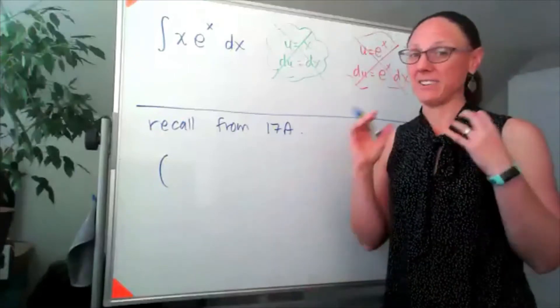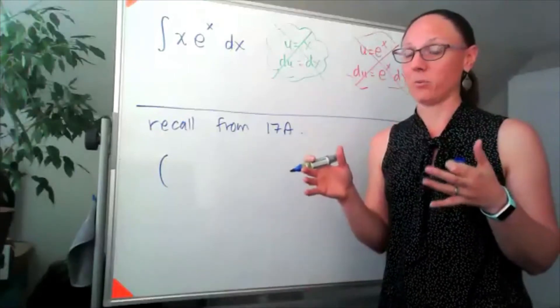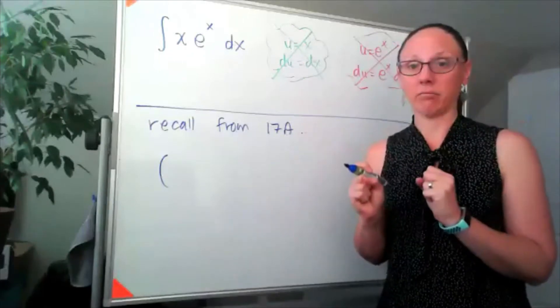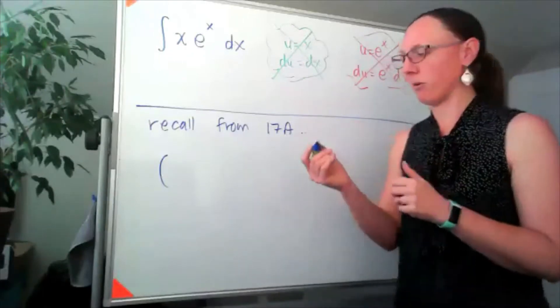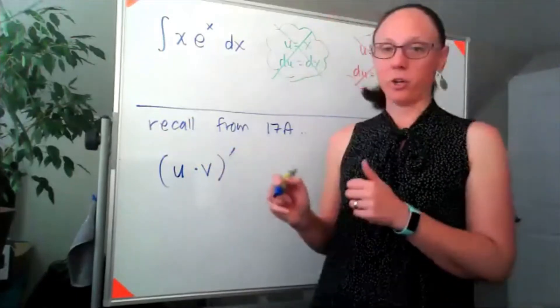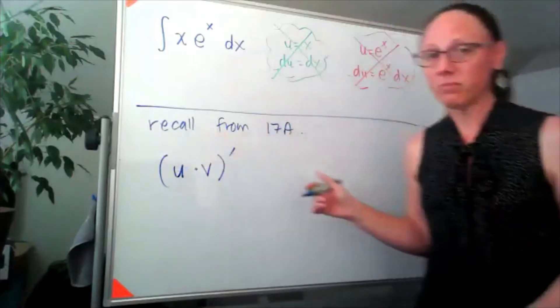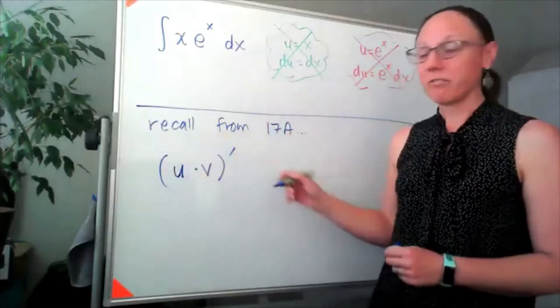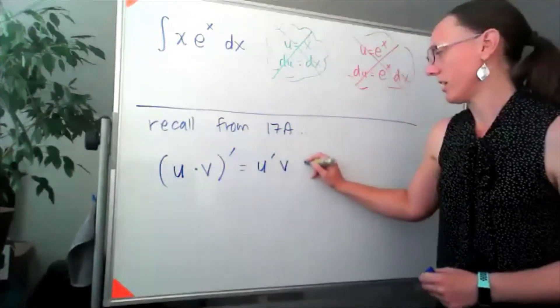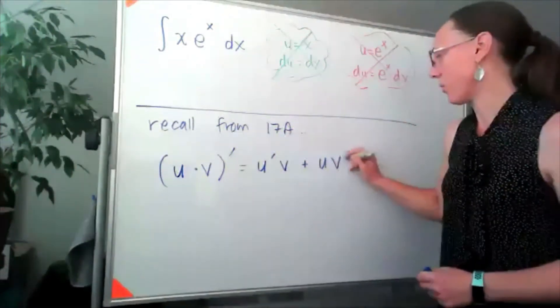And I'll be honest, I don't remember off the top of my head whether Gorski uses f and g or u and v. Sorry, by Monday we'll have figured it out. I'm going to go with u and v because that's what our book uses. So if I have u and v and I take the derivative, I would get u'v + uv'.